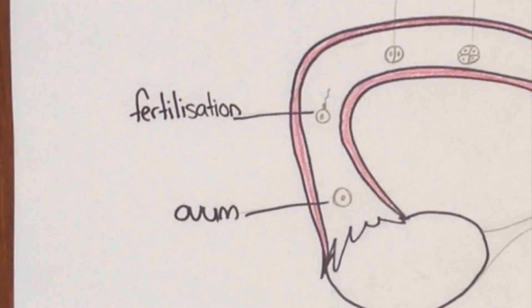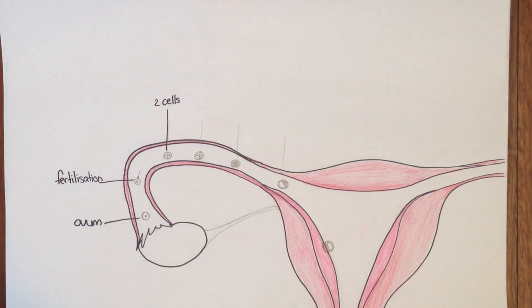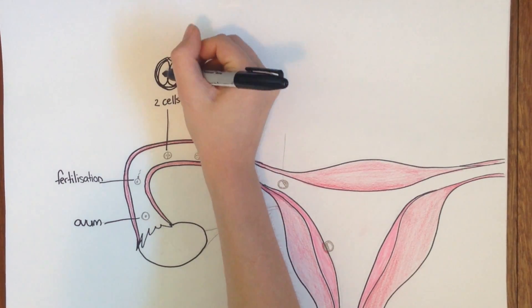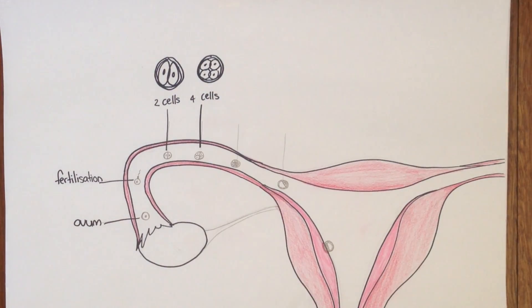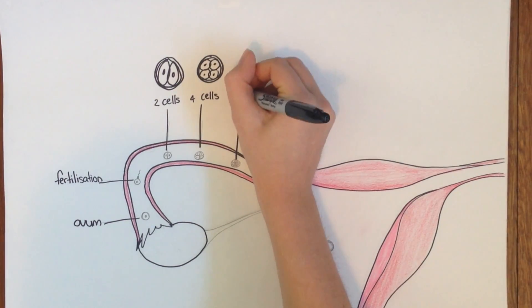After fertilization, rapid mitotic cell divisions of the zygote take place. This is called cleavage. The number of cells continues to increase as it moves through the fallopian tube towards the uterus by peristalsis.